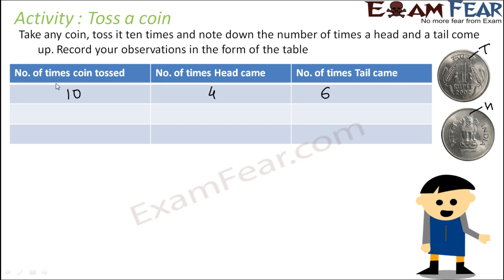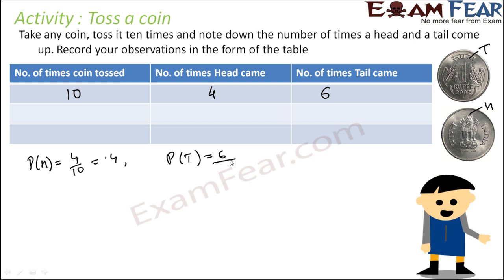In this case, the probability of head is the number of times head came, that is 4, by the total number of trials, that is 0.4. Similarly, probability of tail is the number of times tail came by total, that is 0.6. This is for this case.